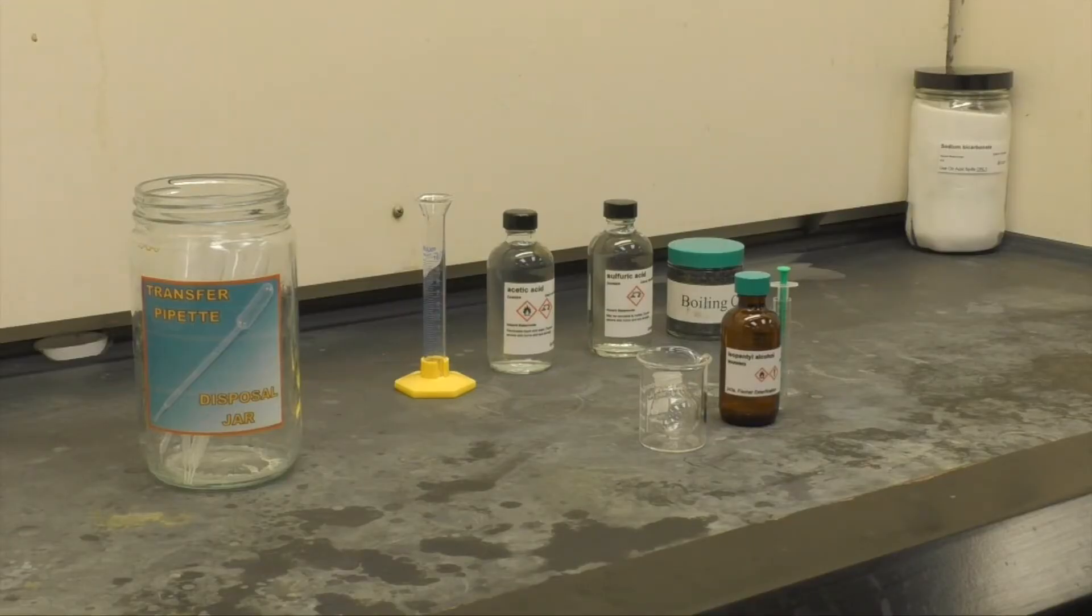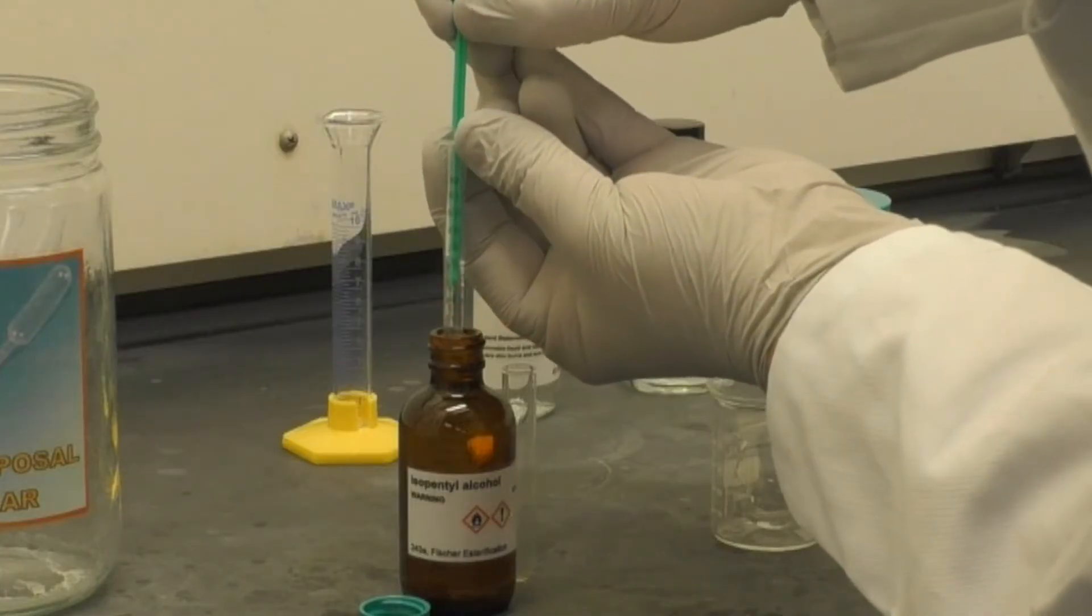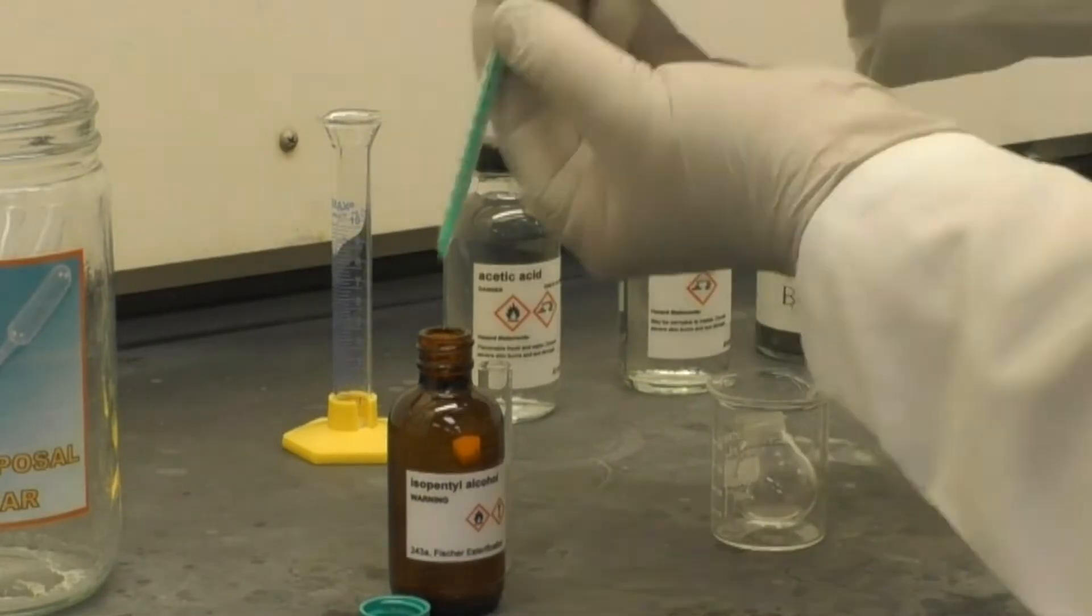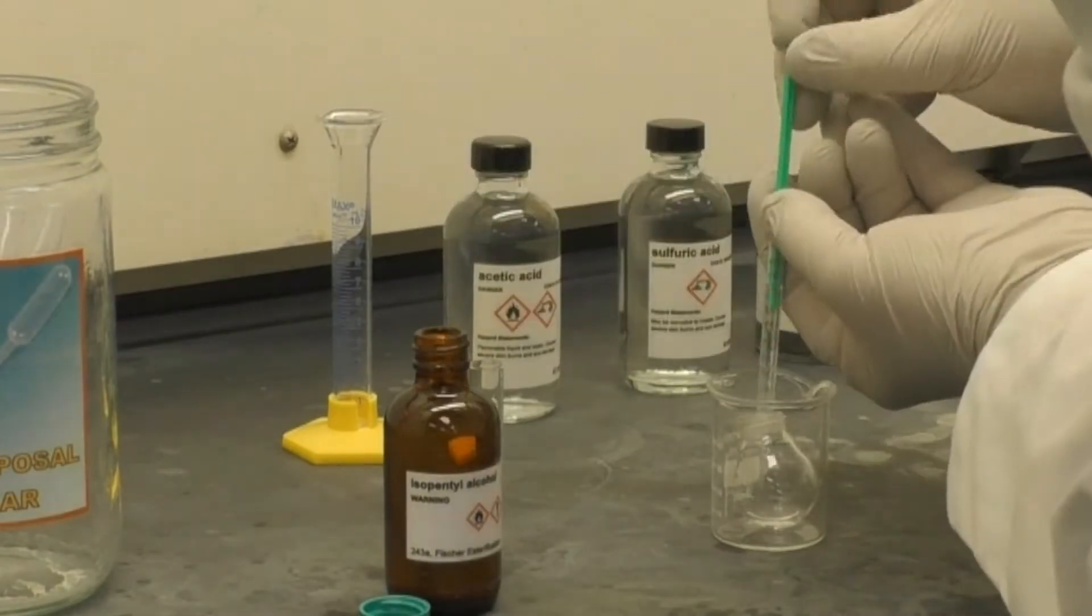First, place the following into a 10ml round bottom flask. Using a 1ml syringe, add 1.5 ml of your assigned alcohol.